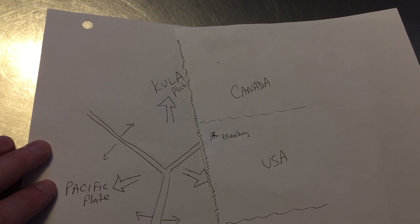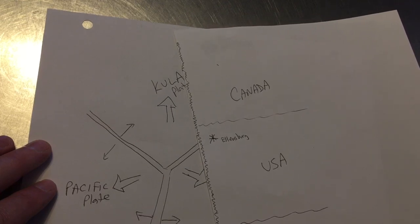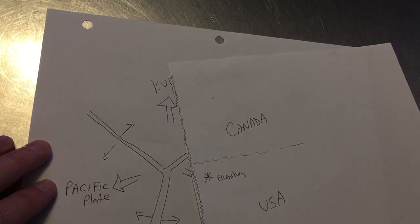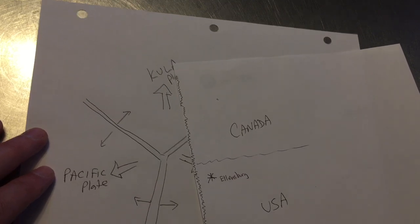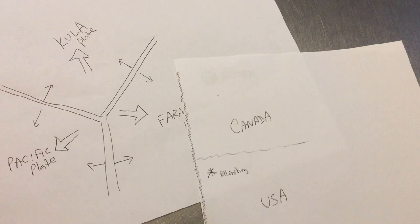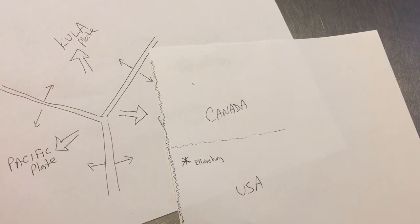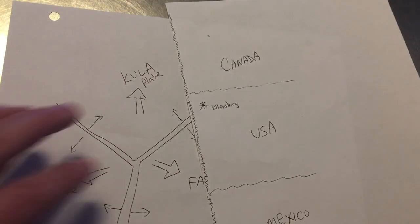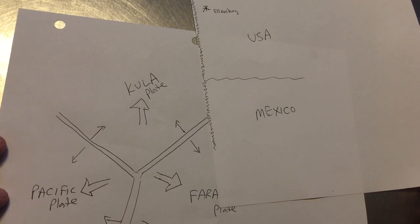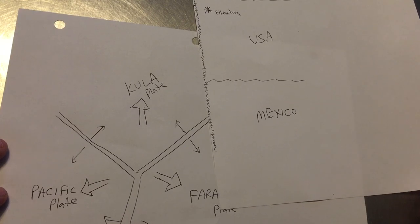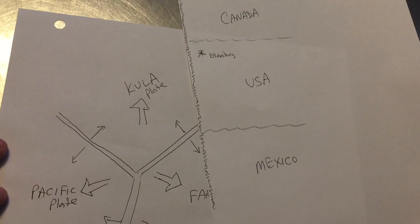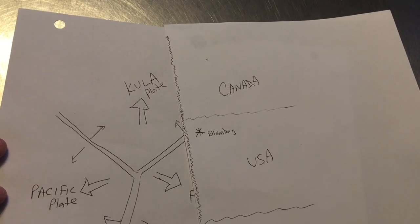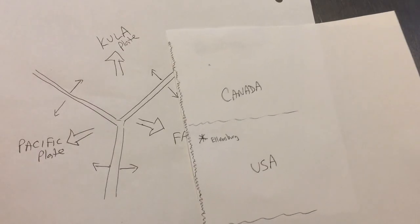But basically, by 55 million years ago, we have the spreading ridge subducting beneath the Pacific Northwest. And then 50 million years ago, 45 million years ago, and then we get to a more familiar looking scene where the Farallon plate is slowly disappearing beneath the western edge of North America. The basic idea I'd like to show, if you can do it, is that we're migrating where the position of this spreading ridge is — it's working its way up the west coast of North America from Mexico to Canada.